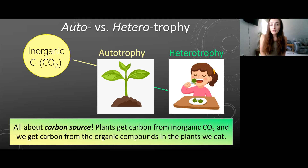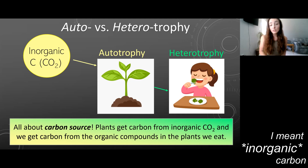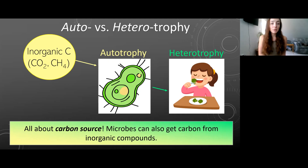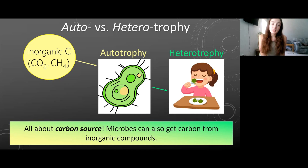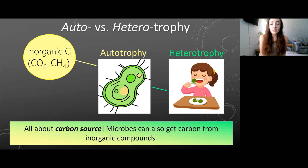Before we move on to litho and organotrophy, I want to mention that inorganic carbon isn't only CO2. For example, there are microbes that can use methane or CO2 as their carbon source. Basically, plants aren't the only thing that can use inorganic carbon as their carbon source, so plants aren't the only examples of autotrophs out there.